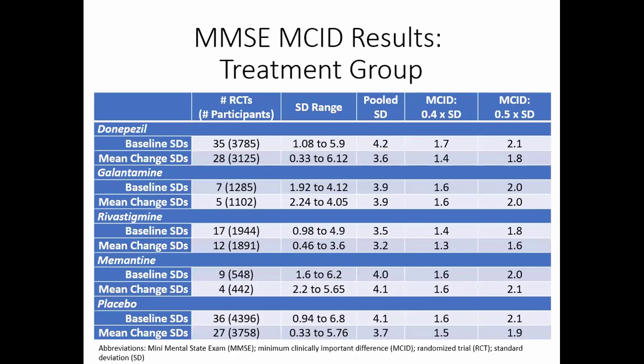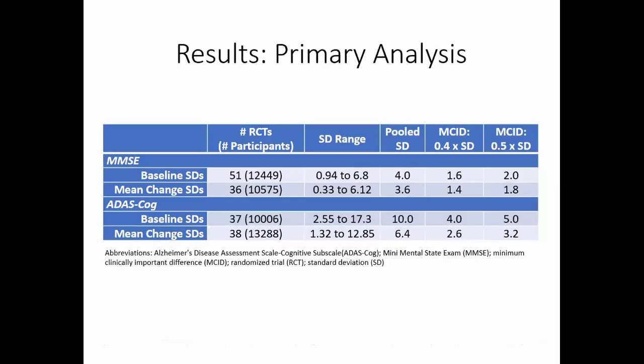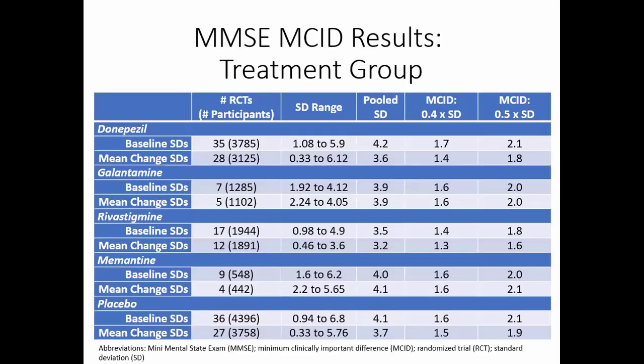Here we demonstrate this for the MMSE. Recalling from the previous slide, using the baseline standard deviations the range is around 1.62, and for the mean change standard deviations it's 1.4 to 1.8. You can see they're generally quite comparable, which is good — meaning that if you have smaller numbers of randomized trials, the method may still work for you.